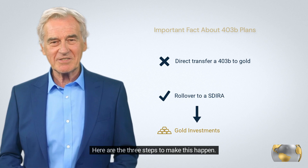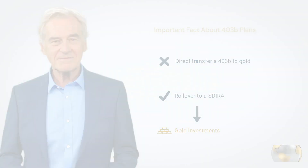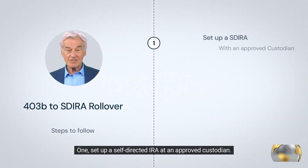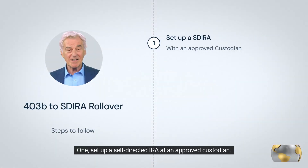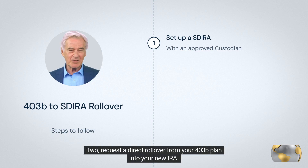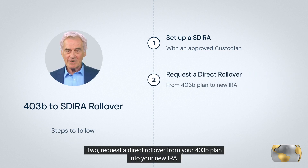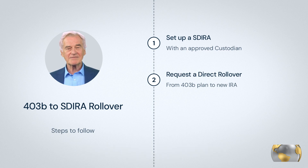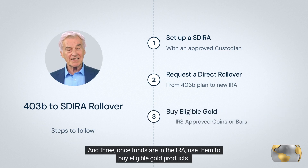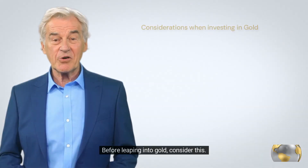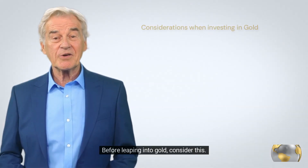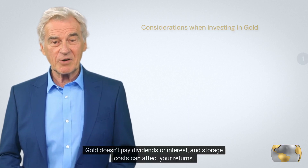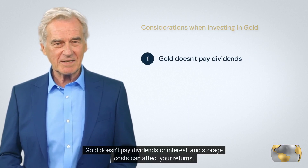Here are the three steps to make this happen. One: set up a self-directed IRA at an approved custodian. Two: request a direct rollover from your 403b plan into your new IRA. And three: once funds are in the IRA, use them to buy eligible gold products.